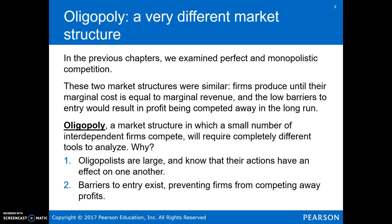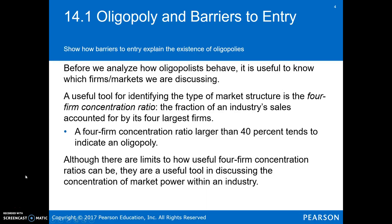So we'll look at what oligopolists are before we look at how they compete. Oligopolists are large — it's a small number of large firms that dominate the market. Their actions have an effect on one another; that's the interdependence. And there are barriers to entry here, just like in monopoly. One way to identify which firms we're talking about is to use a four-firm concentration ratio — that is, the fraction of an industry's overall sales accounted for by its four largest firms. A ratio larger than 40 percent would typically indicate an oligopoly.